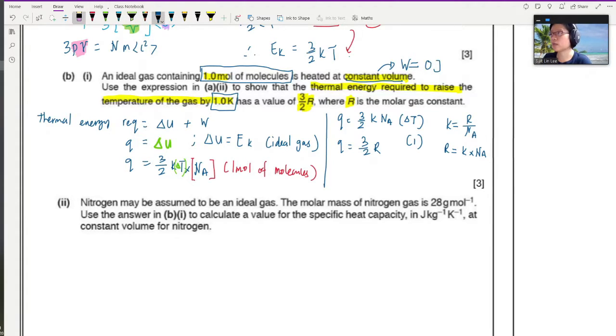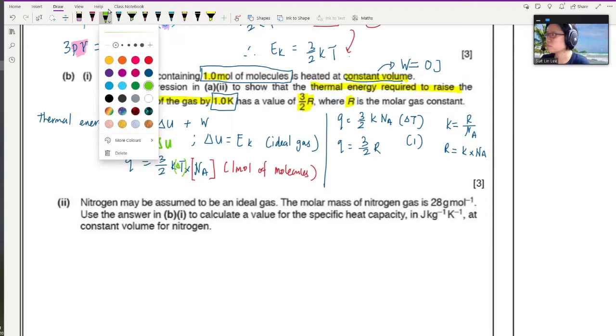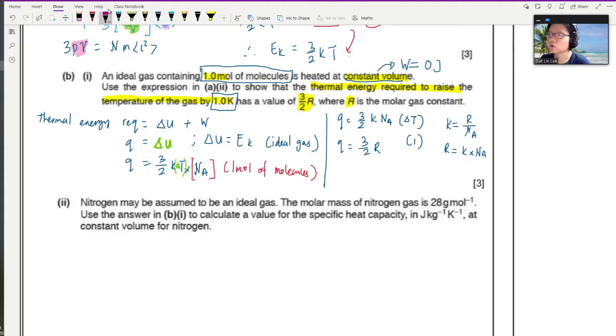So Q will be equal to 3 over 2 R. Proven. So you can see this topic, sometimes you can get those proving questions. So you might be wondering where is the mark? W equal to 0 is one mark. If I see something like NA times 3 over 2 k T, that means you know that this is one molecule and you know to multiply the Avogadro number. This is one mark.